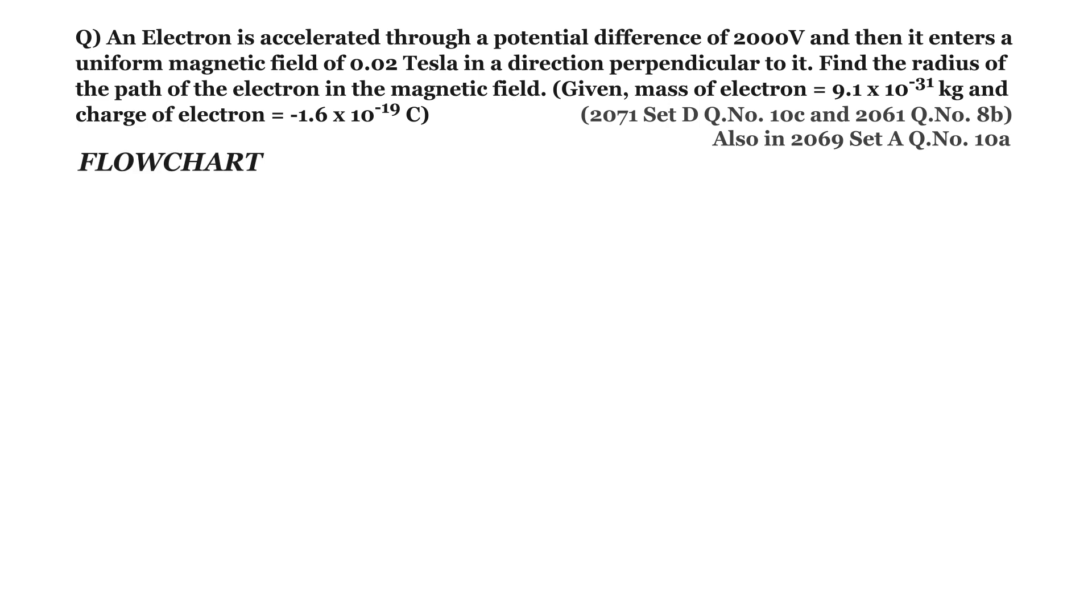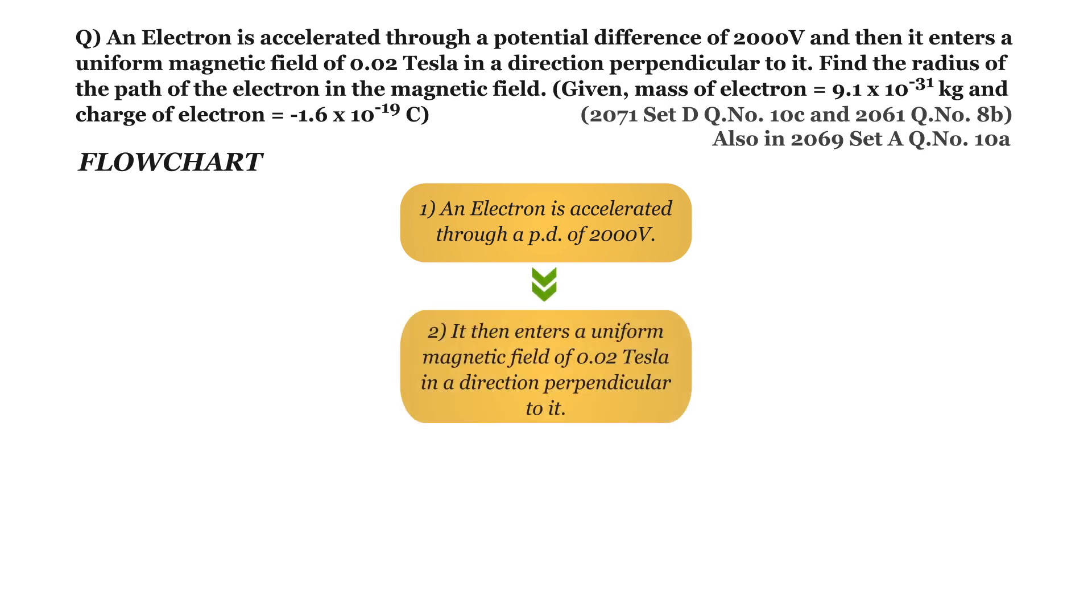Now let's make a flowchart of the given problem. 1. An electron is accelerated through a potential difference of 2000 volt. 2. It then enters a uniform magnetic field of 0.02 tesla in a direction perpendicular to it. 3. What is the radius of the path of an electron in that magnetic field?